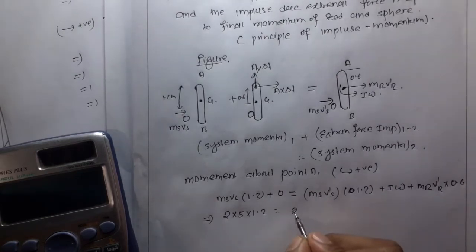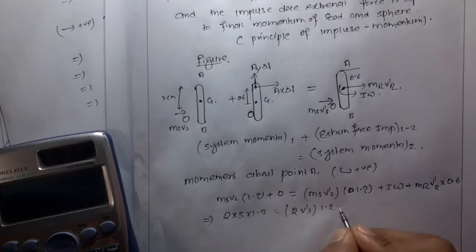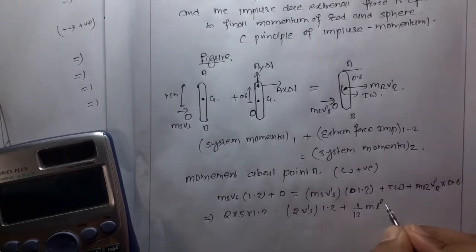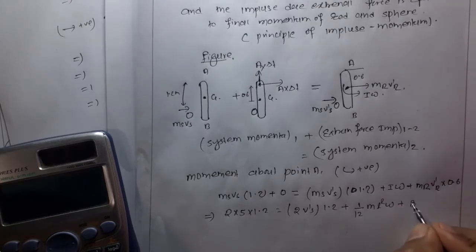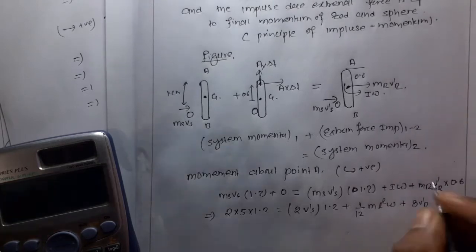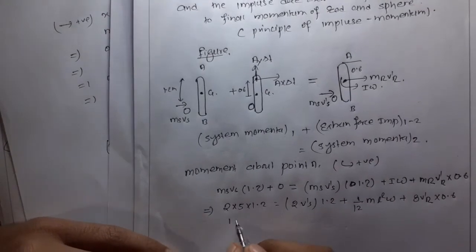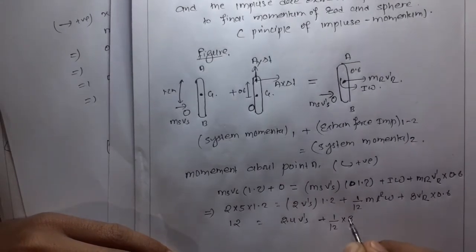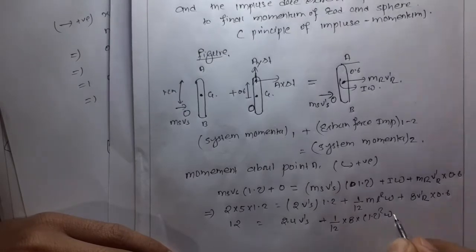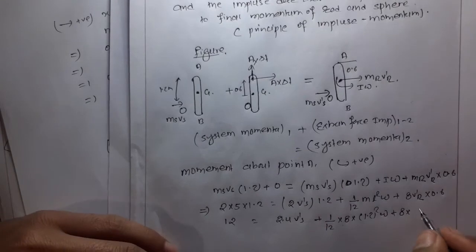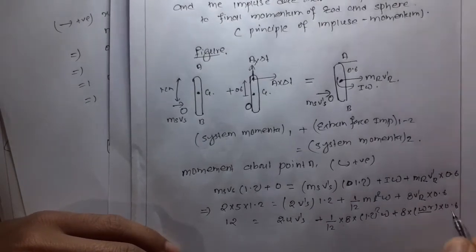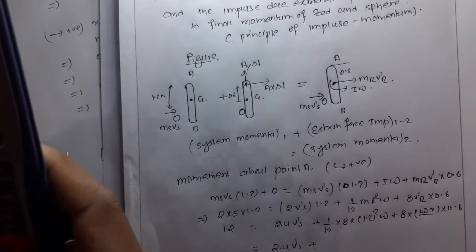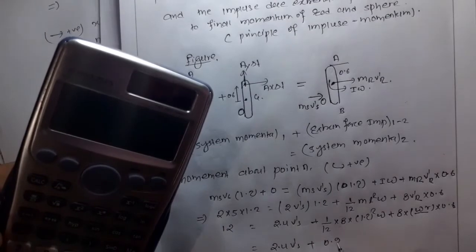This implies 2×5×1.2 equals (1/2)×8×(1.2)²×omega plus 2×v'_s×1.2. So 12 equals 1.2²×8/2 which is 0.96·omega plus 8×v'_s×0.6, giving 2.4v'_s plus 0.96·omega plus 2.88·omega.